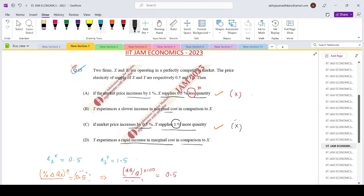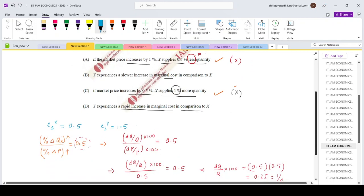So now we come to option B and D. B and D are related to the marginal cost comparison between firm X and firm Y. So if you look at the elasticity values, we can say that elasticity of supply for firm Y is greater than elasticity of supply for firm X.